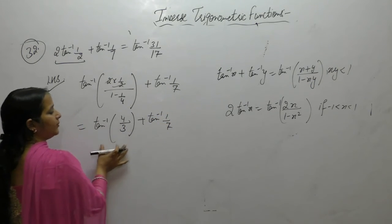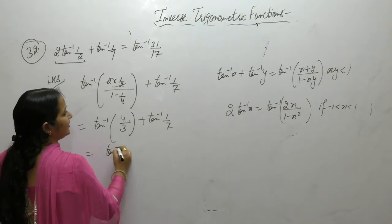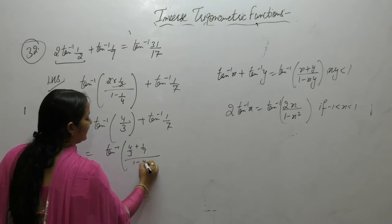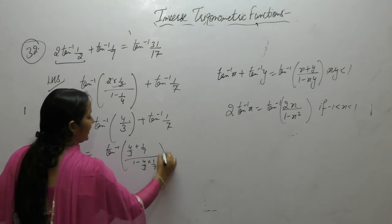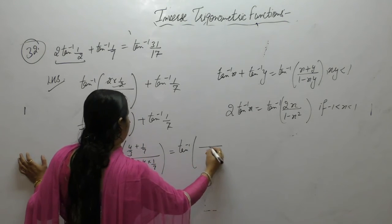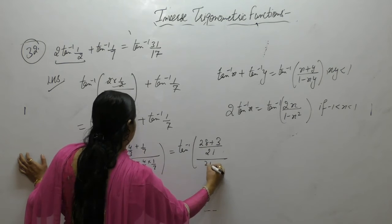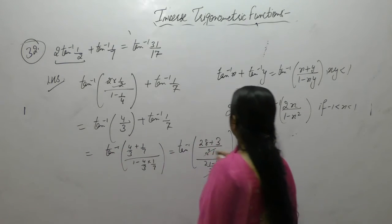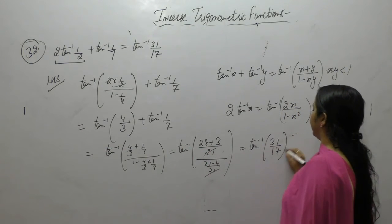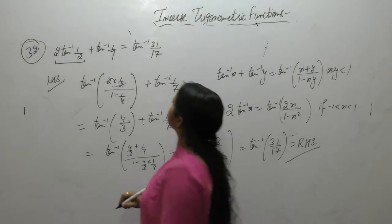Now apply tan⁻¹x + tan⁻¹y = tan⁻¹((x+y)/(1-xy)). Taking the common denominator: 7×4 + 3×1 = 28+3 = 31 in the numerator, and 21-4 = 17 in the denominator. So tan⁻¹(31/17), which equals the right hand side.